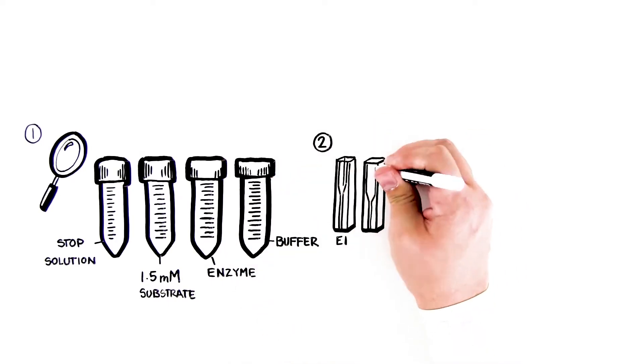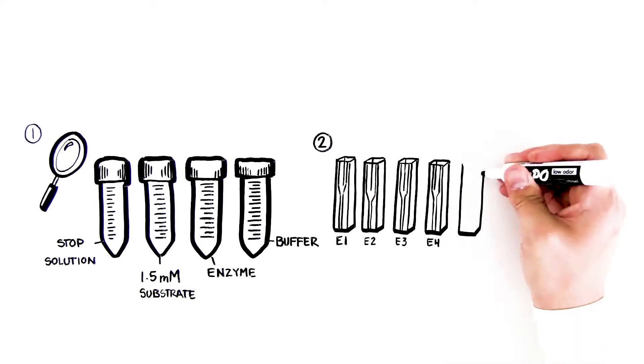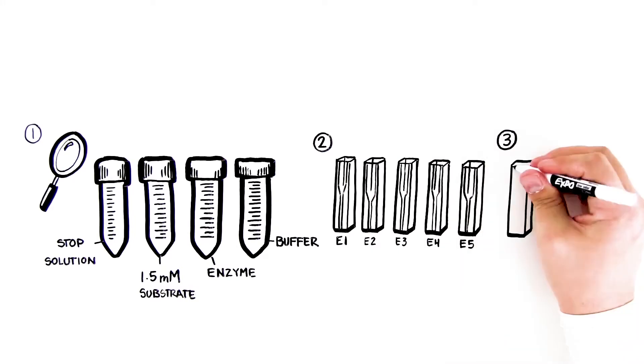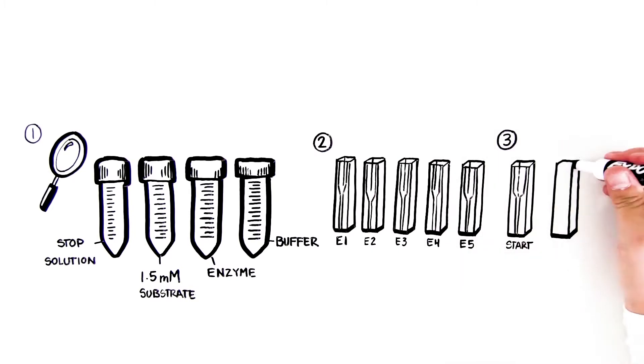Step 2: Label 5 cuvettes E1 through E5. Step 3: Label the two remaining cuvettes start and end.